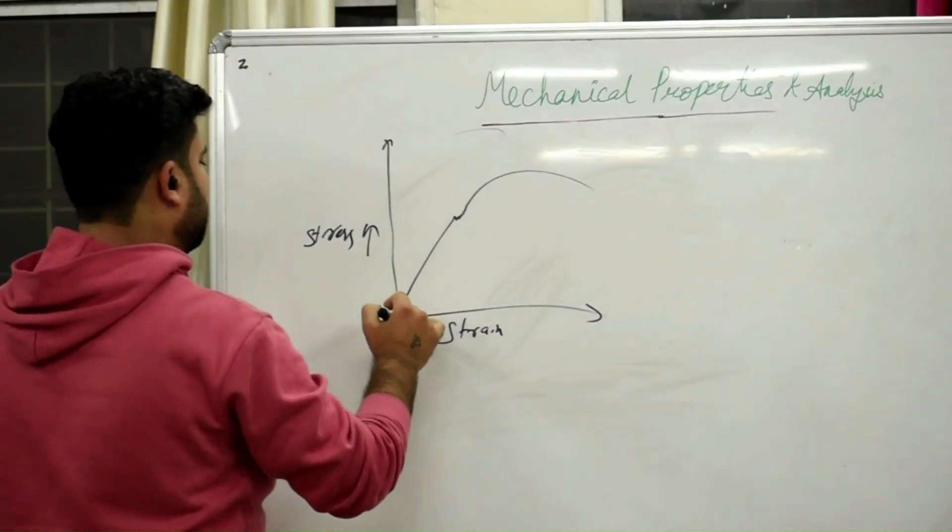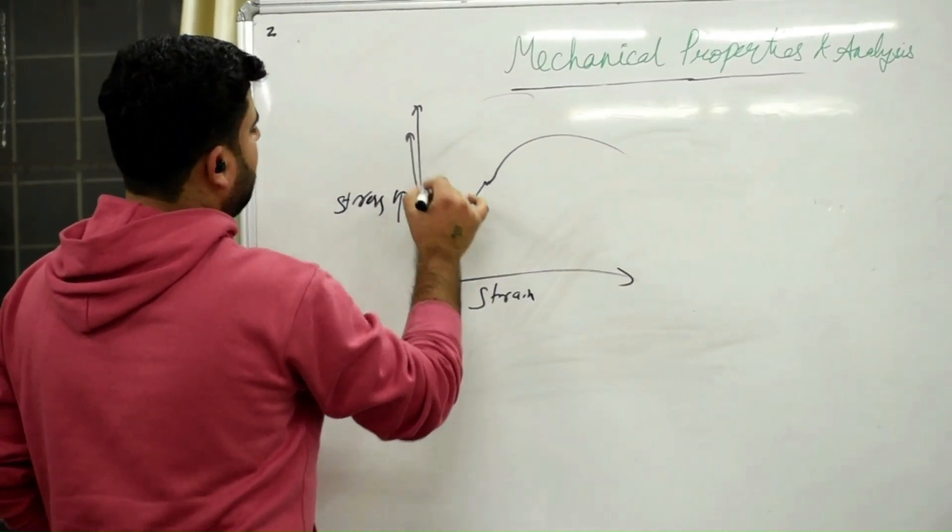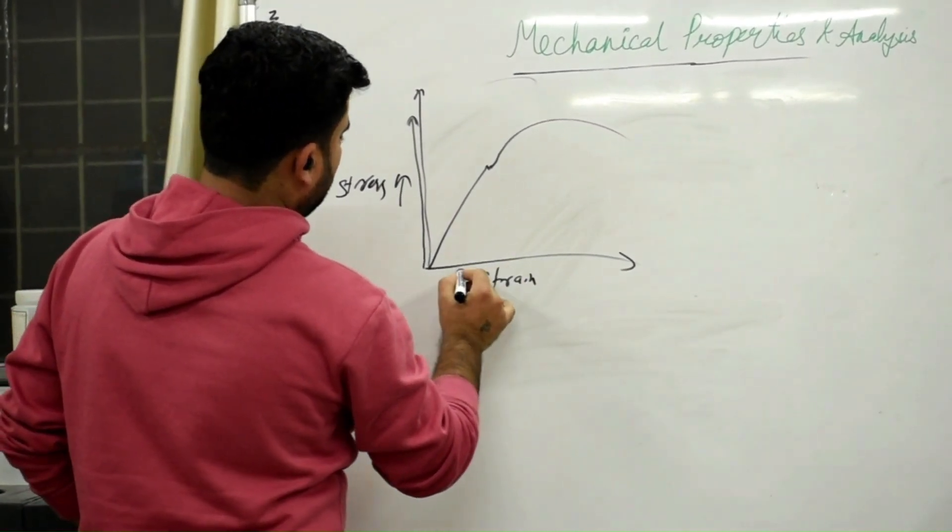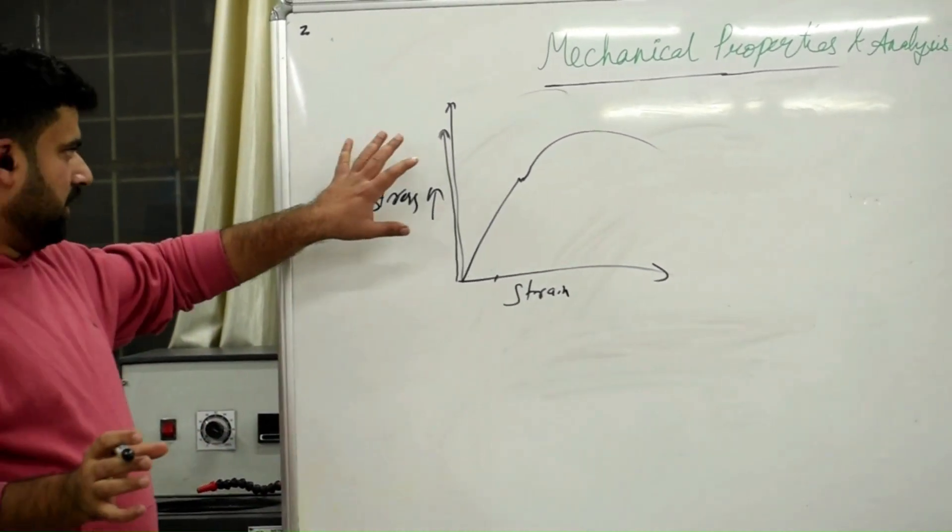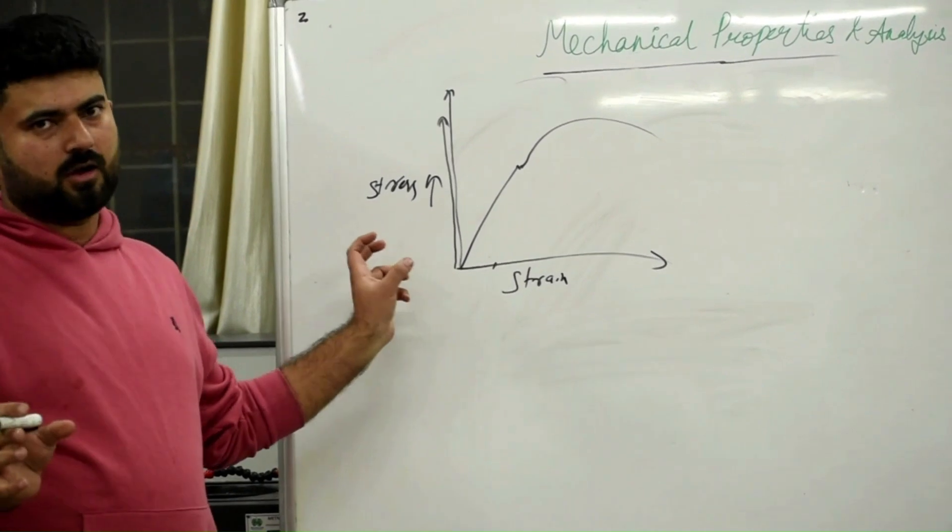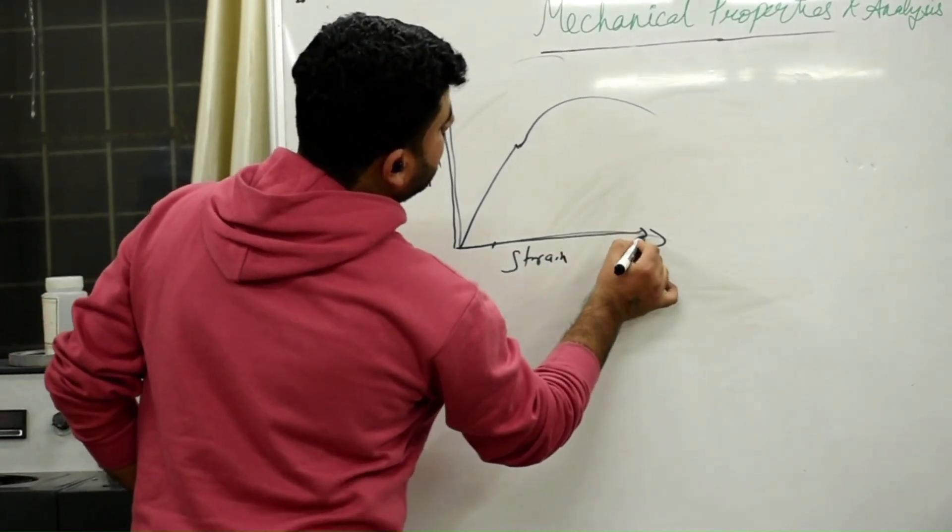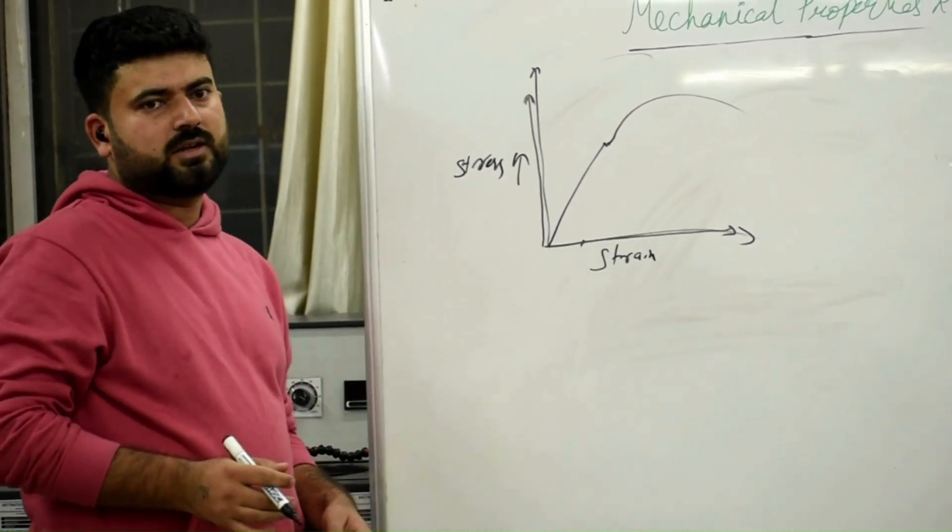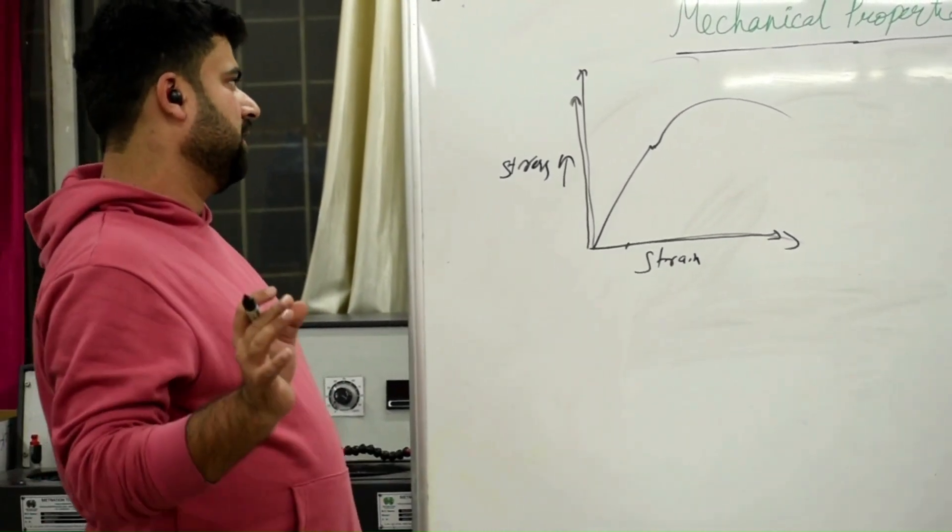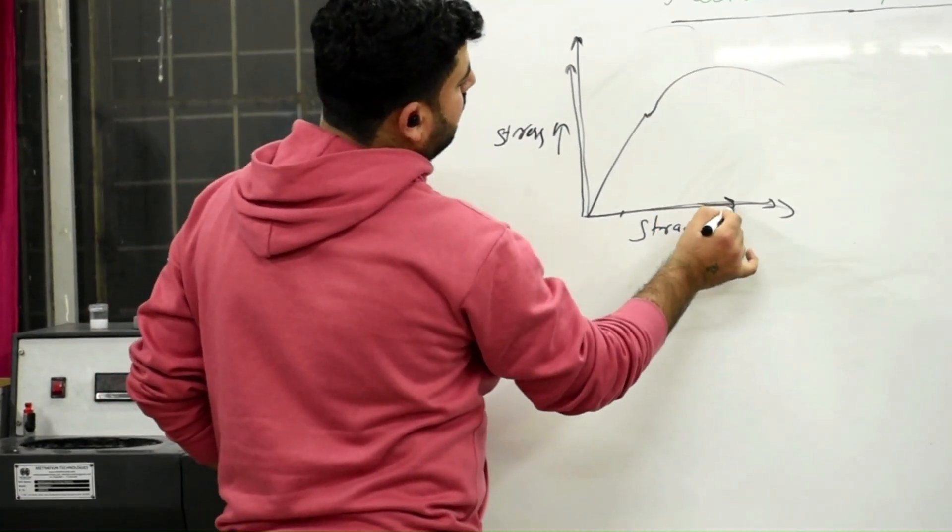When material is having higher Stress value toward the higher Stress and lower toward the Strain, that material is said to be strengthened but with a lack of ductility. Whereas a material with higher Strain is said to be a more ductile material. What we consider in an application is a material should be having good Strength as well as Ductility.